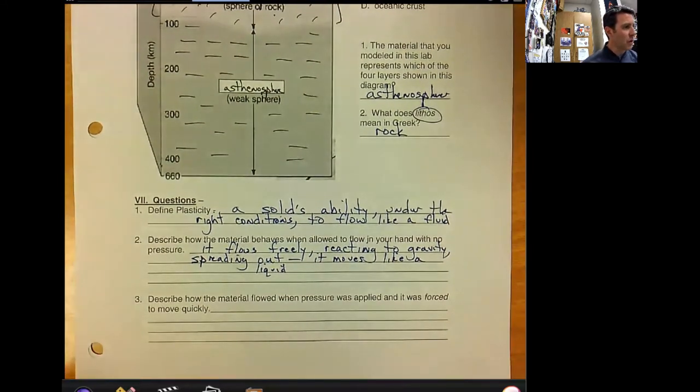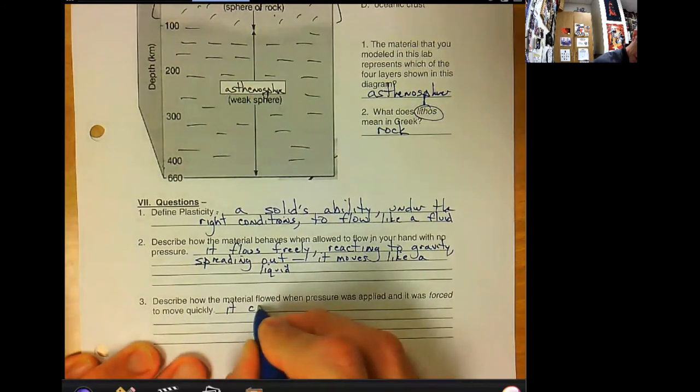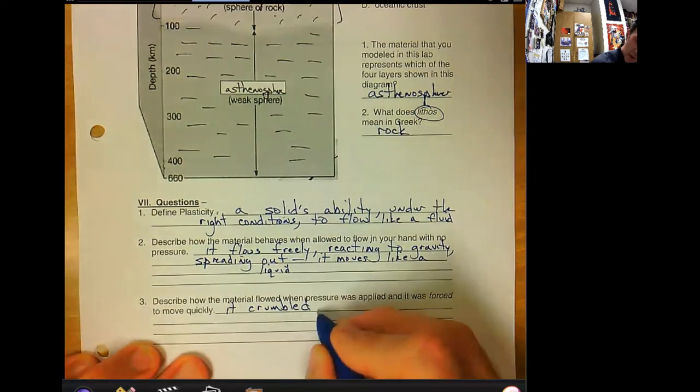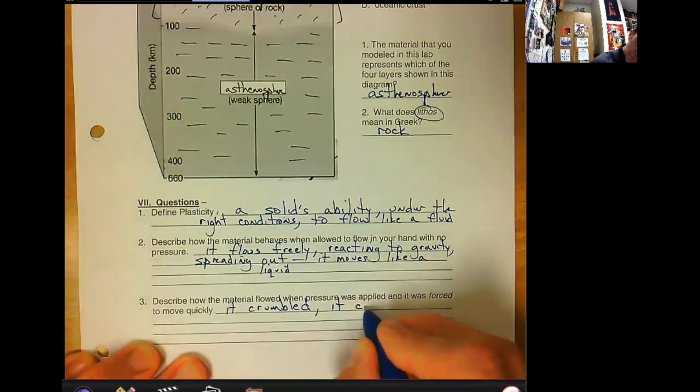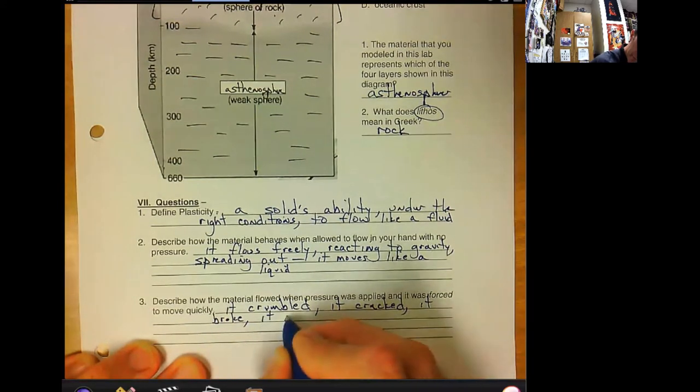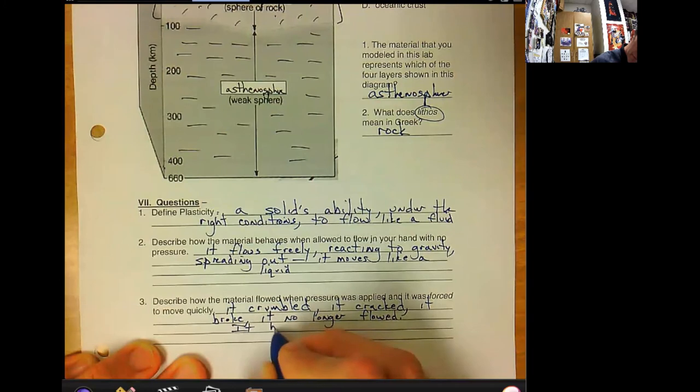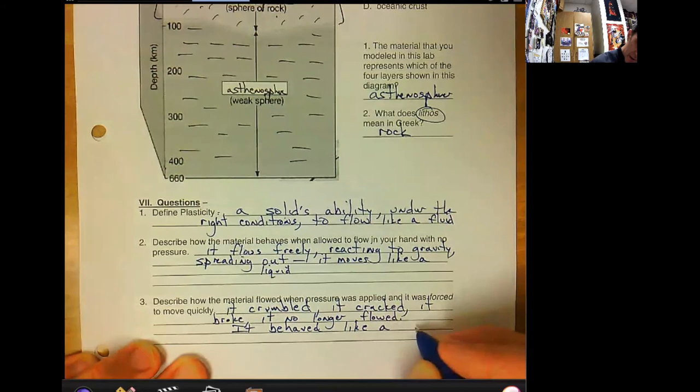Describe how the material flowed when pressure was applied and it was forced to move quickly. Well, from the video or from doing it, it crumbled, it cracked, it broke. It no longer flowed. It behaved, it behaved how? Behaved like a solid.